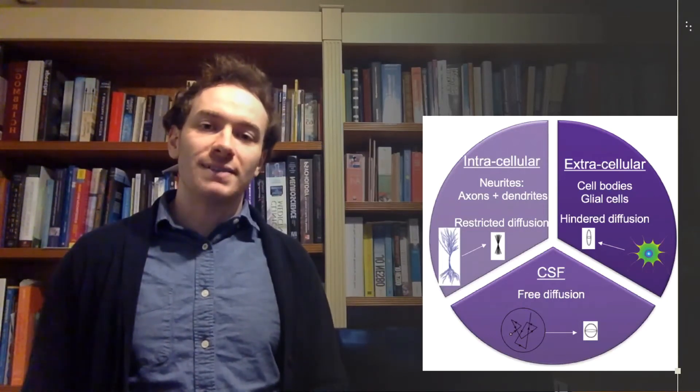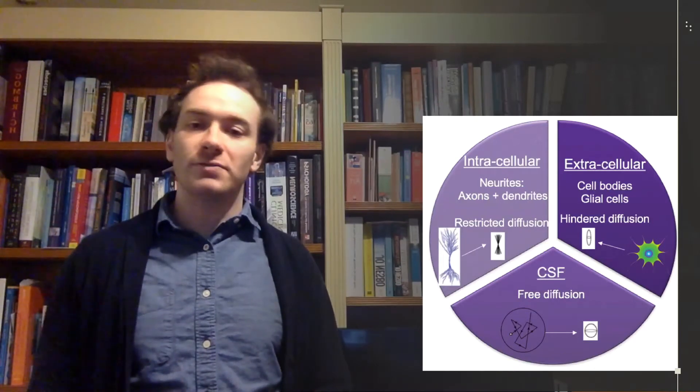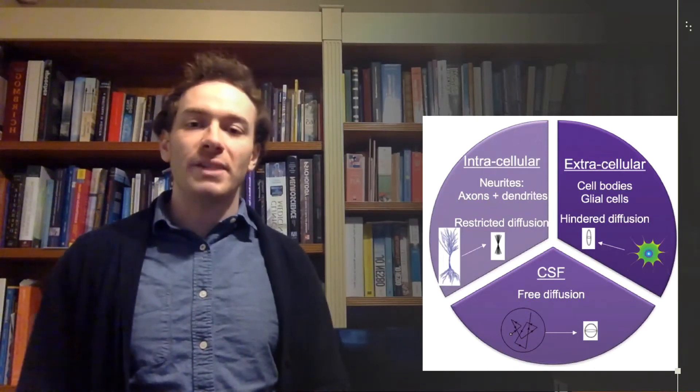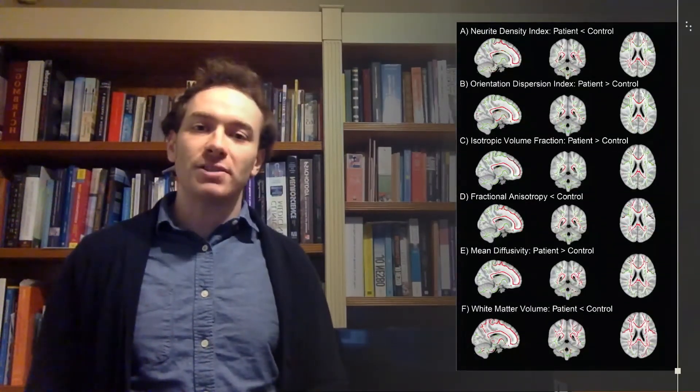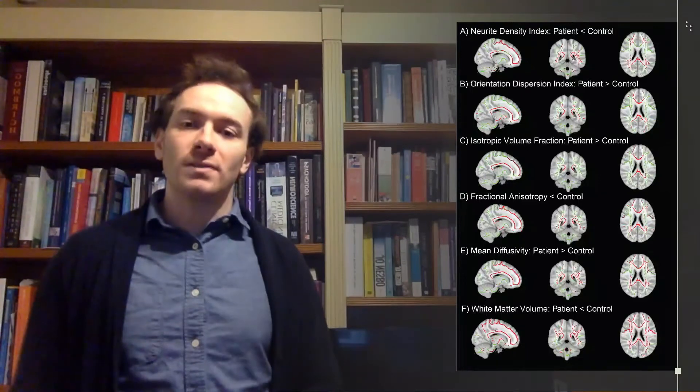We measured this in our TBI patients and healthy controls alongside additional measures of brain volume. As expected, reductions of FA were seen in the patient group alongside lower grey and white matter volume. Lower Neurite Density Index was also seen with an increase in Orientation Dispersion Index. These effects were widespread across the white matter with spatial variation seen across the metrics.